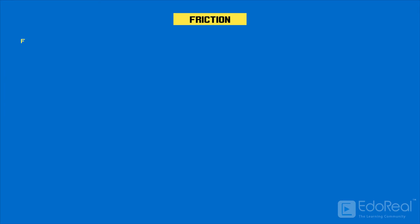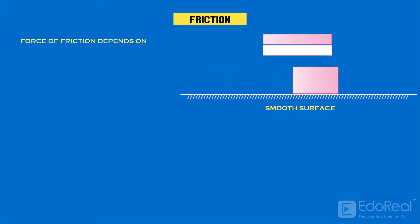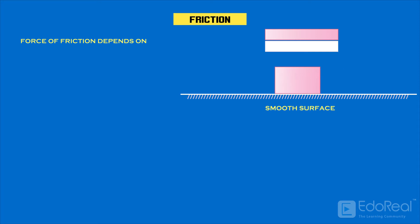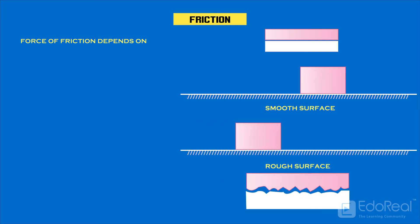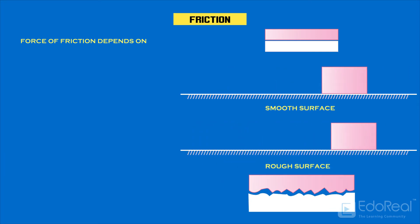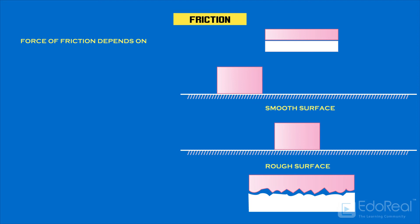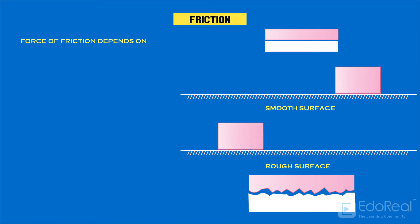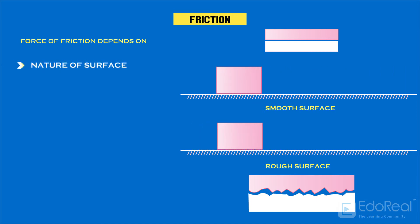Let us see what factors the force of friction depends on. Smooth surfaces allow objects to move easily. Rough surfaces make it tough. So, friction depends on the nature of the surface.